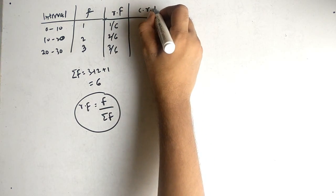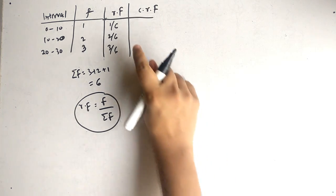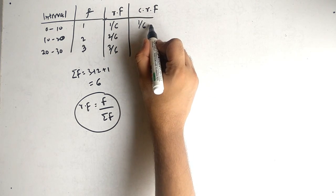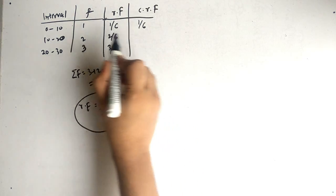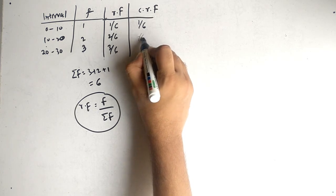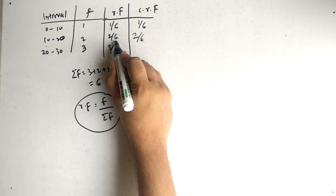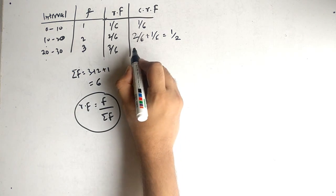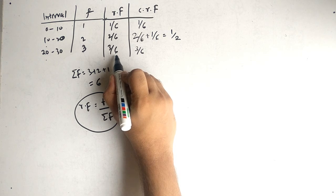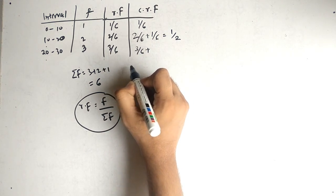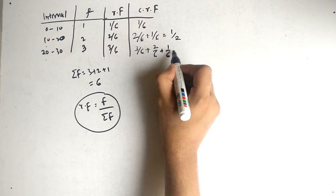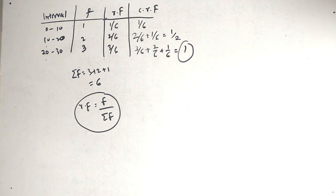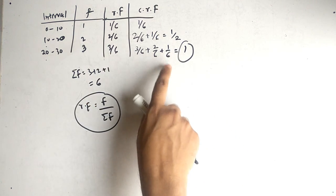Now find the cumulative relative frequency. Write the relative frequency and add all previous relative frequencies. For interval 0 to 10, there is no previous, so it stays 1/6. For 10 to 20, it is 2/6 plus the previous 1/6, giving 1/2. For 20 to 30, it is 3/6 plus 2/6 plus 1/6, giving 1. Whenever the final answer is 1, this confirms you are adding the relative frequencies correctly — the last interval's cumulative relative frequency should always be 1.